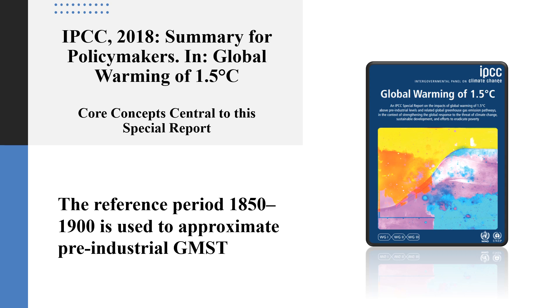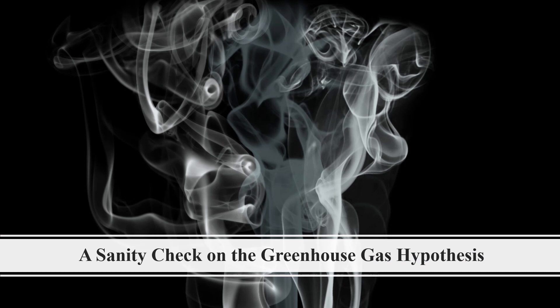And that is why the extended NOAA data is so important. It now allows us to use it to measure both the reference period itself and global temperature anomalies from the start point of 1850. And most relevant to this video, as a result of this added capability, we can now conduct a sanity check on the greenhouse gas hypothesis using NOAA data.